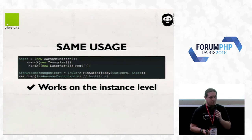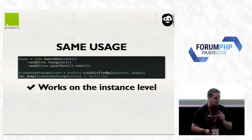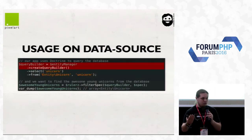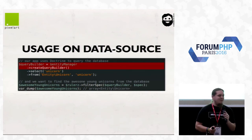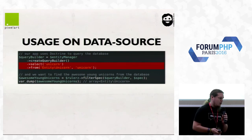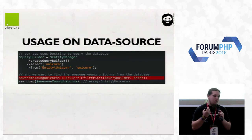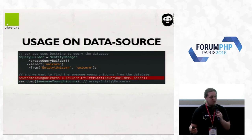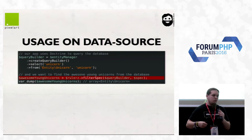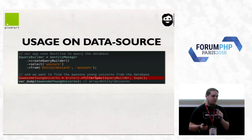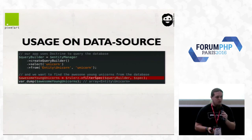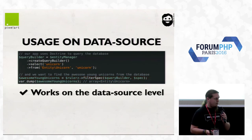The usage is the same: create a new AwesomeUnicorn specification, combine with Youngster and combine with LaserHorn not. But this time you ask Rulers if the unicorn instance satisfies the specification. It works on the instance level, but you don't want to get a million records from the database. So you create a Doctrine query builder, and simply ask Rulers to filter this query builder with your specification — Rulers applies the generated SQL, applies it to the query builder, and fetches only the matching unicorns from the database.